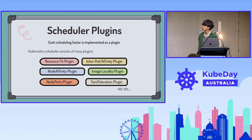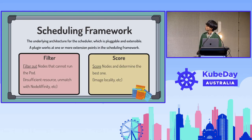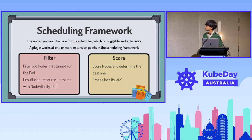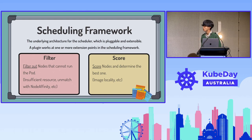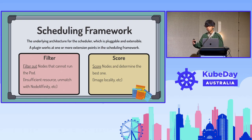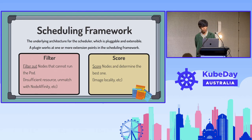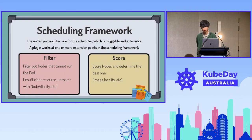The scheduler is basically composed of many such plugins. Those plugins and their interfaces are based on the architecture called the scheduling framework — the fundamental architecture of the Kubernetes Scheduler. It's pluggable and extensible, defining multiple extension points where a plugin can do something. At the filter extension point, plugins filter some nodes; at the score extension point, plugins score nodes.